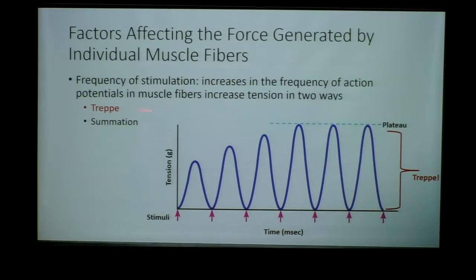TREP is the first principle we'll look at. This is the idea that if you stimulate a muscle — and the stimulus is nothing but an action potential fired from that motor neuron — looking at tension, the amount of force produced against time, the initial muscle contraction will generate a set amount of force.